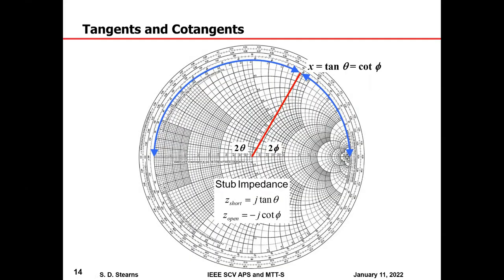Tangents and cotangents are easily computed — RF engineers know this from transmission line stub calculations. The impedance of a short-circuited stub: start at zero on the far left, revolve clockwise through a physical angle of 2θ (electrical angle θ), and read off tan(θ) on the perimeter reactance. For an open-circuited stub, start at infinity and revolve clockwise through 2θ and read off −j·cot(θ). Going counterclockwise gives the cotangent directly. So tangents and cotangents are easily obtained.